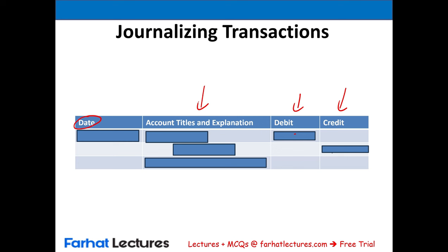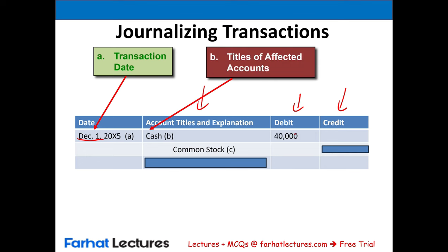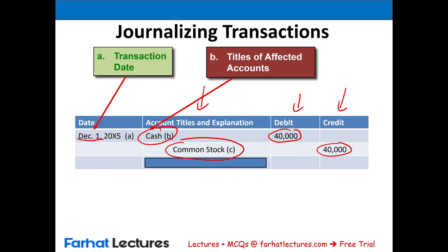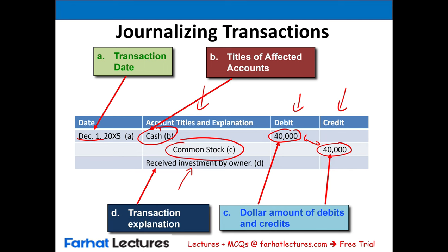How do we journalize? First, we have a date — every transaction has a date. For example, December 1st, 20X5. For every transaction, at least two accounts are affected. For this illustration we have cash and common stock. We have a debit amount and a credit amount — here we debited cash $40,000 and credited common stock $40,000. Total debits equal total credits: $40,000 equals $40,000. Then we add a transaction explanation — in this case, 'received investment by owner.'